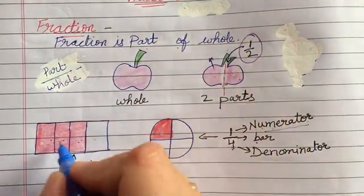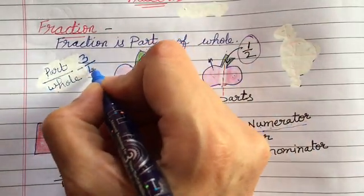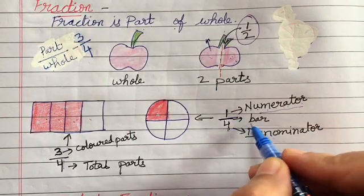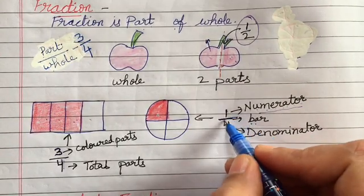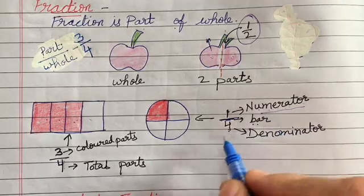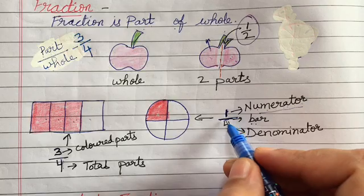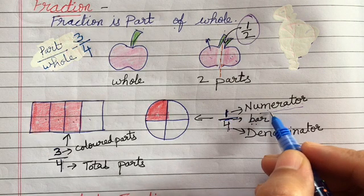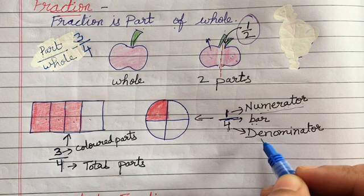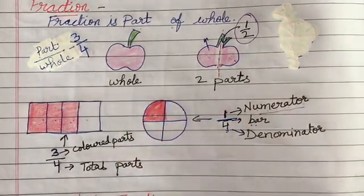So how many parts are colored? 3. And how many are total? 4. So this is your fraction: 3 upon 4. For a recap, this line is called the bar. The digit above this bar is the numerator and below is the denominator. So this is fraction — fraction is part of whole.